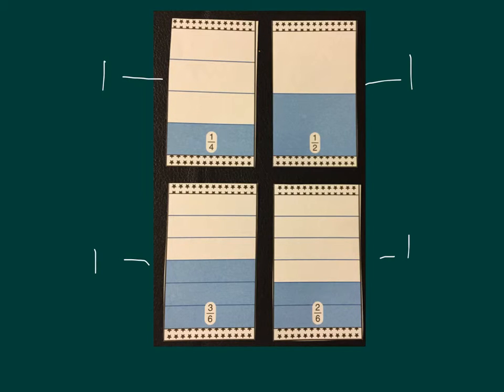Some of the cards will have the same numerator, but different denominators. Just like the top two cards. Notice they both have a numerator of one, but different denominators. What this means is these cards will be split up into different amounts of equal parts. In this case, one-fourth, it's one out of four equal parts, compared to one-half, which is one out of two equal parts.